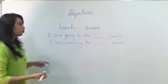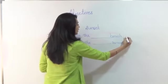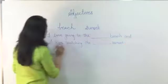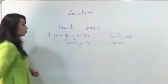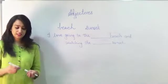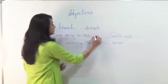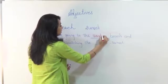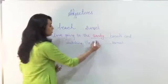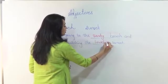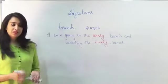I love watching the sunset. Now I want to make it into one sentence. So I can write and watching the sunset. I can write sandy beach and watching the lovely sunset. Now it is your turn.